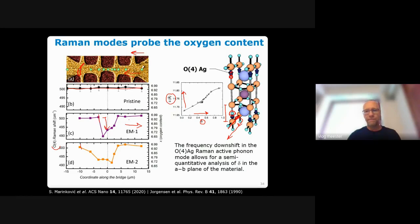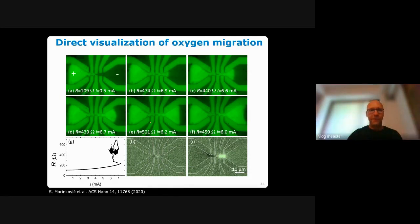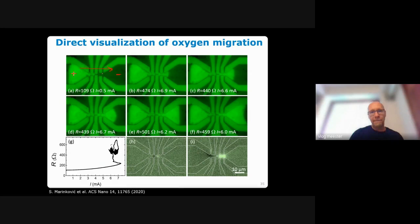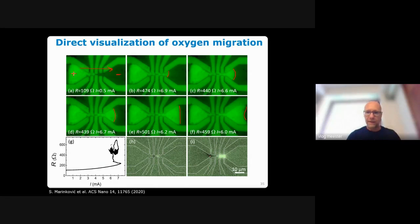For direct optical imaging, we start from an already-electromigrated sample and reverse the current polarity — placing positive on the left and negative on the right — to drive oxygens from right to left, replenishing the left side while creating vacancies on the right. In the sequential optical images, we observe the oxygen vacancy front propagating progressively as more current is applied, directly visualizing the directional migration of oxygen through the YBCO film.